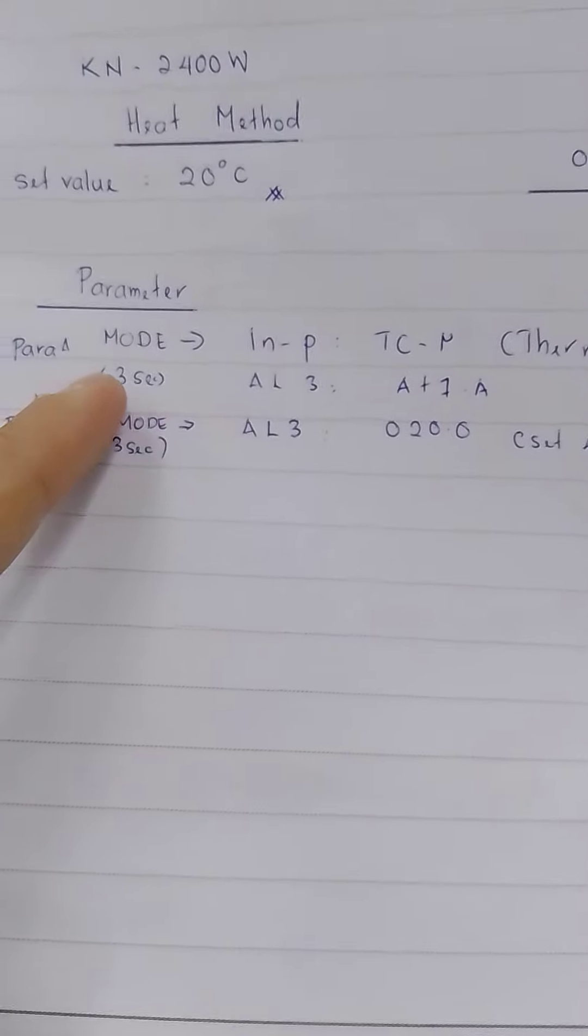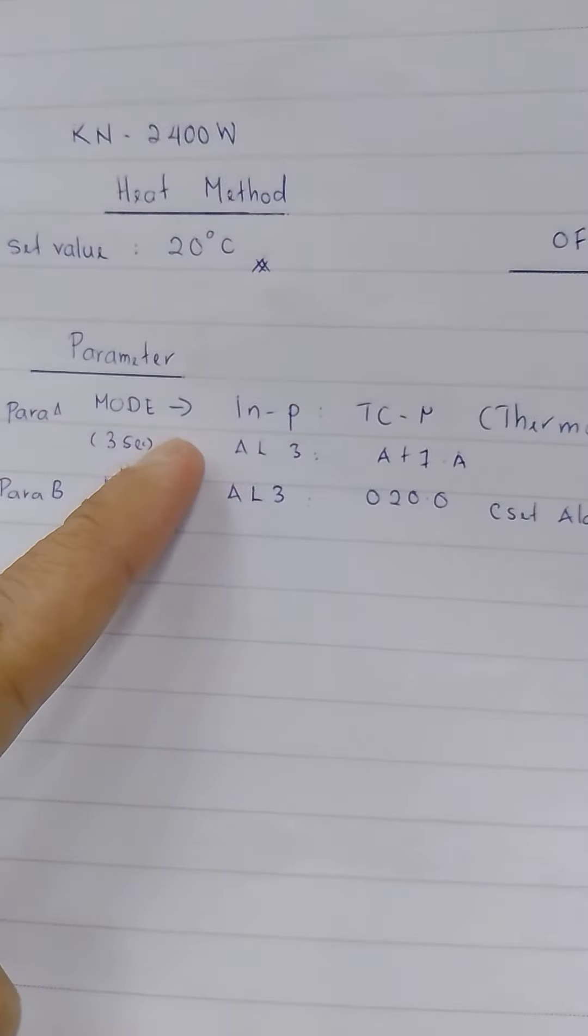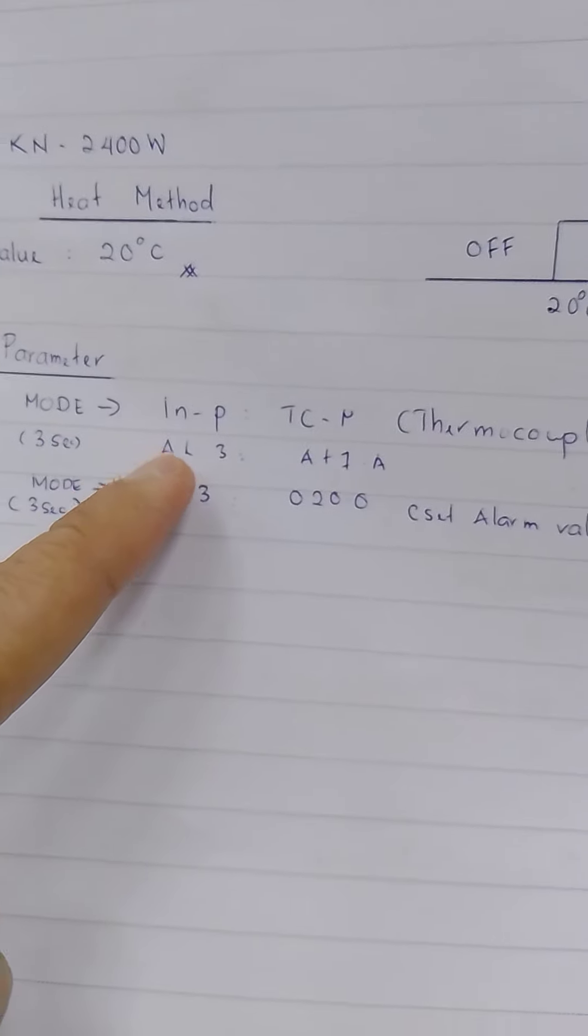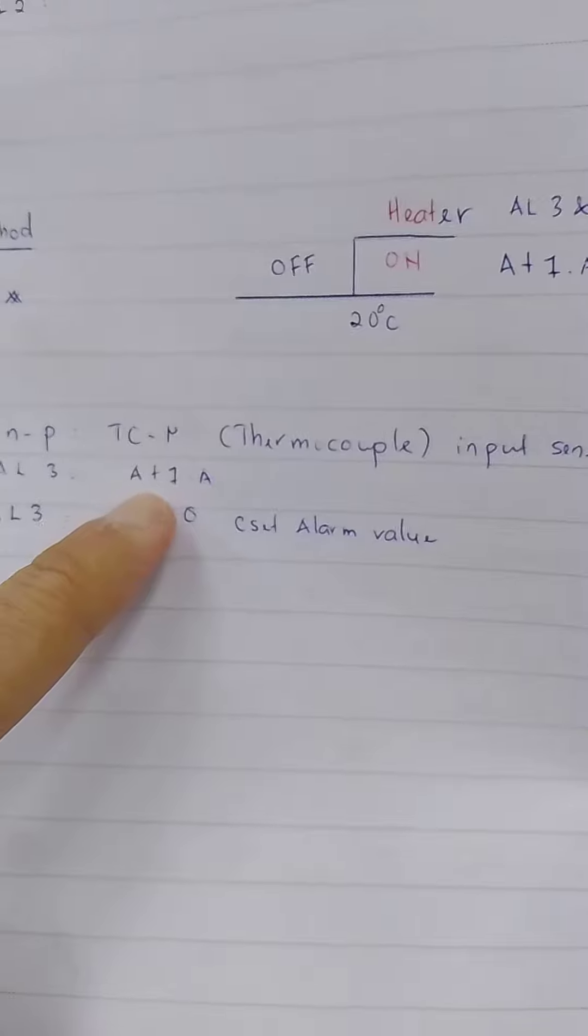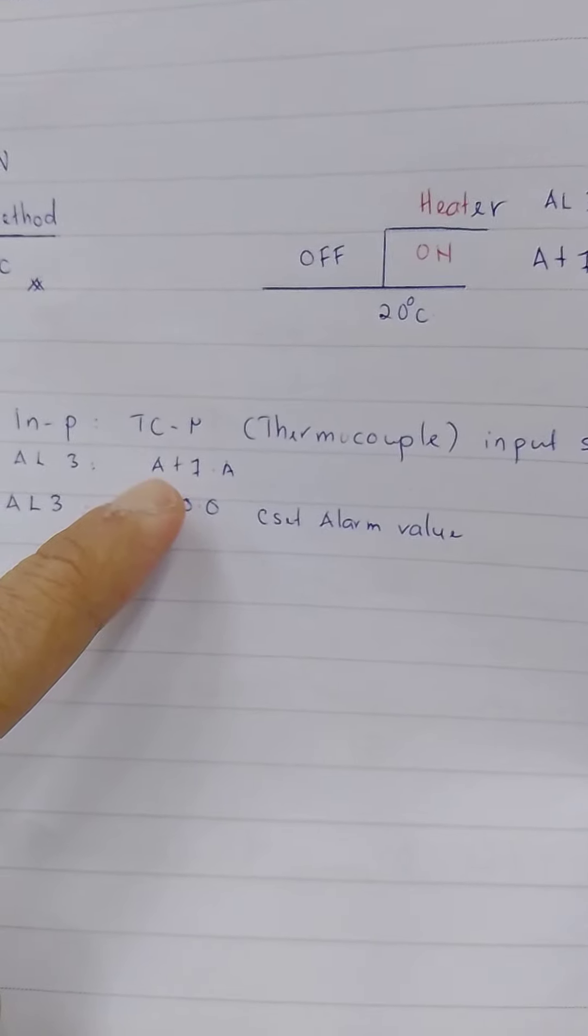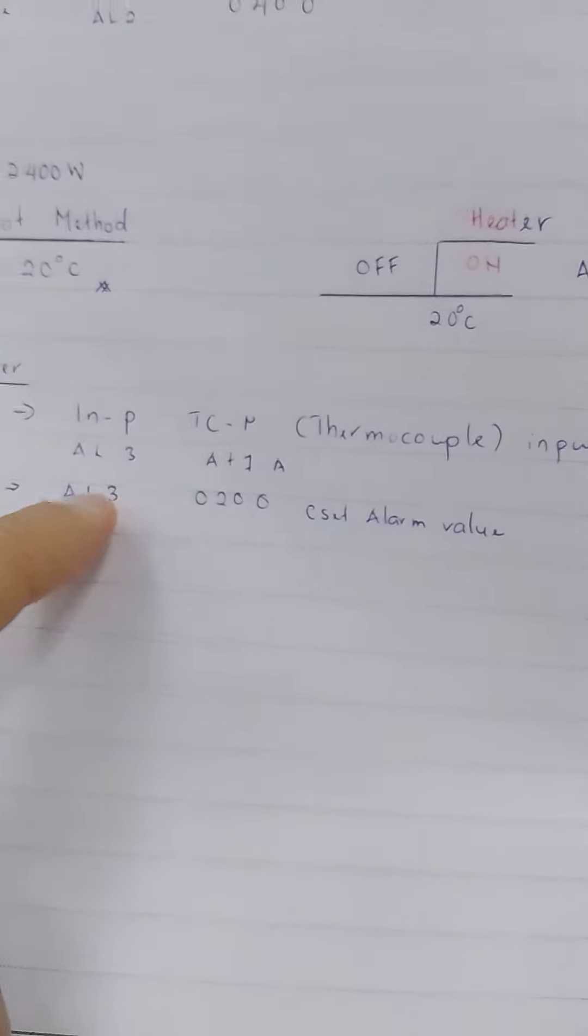So parameter setting, press parameter input. Mode, press 3 seconds, input thermocouple. So alarm 3 I use AT1.A. Ok, for the alarm, high limit alarm, ok.